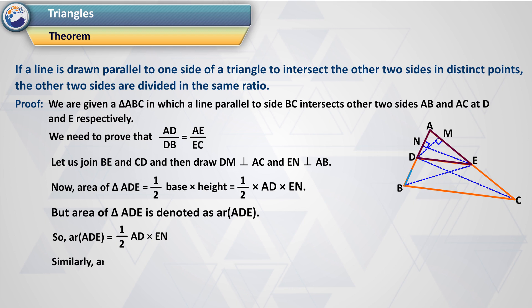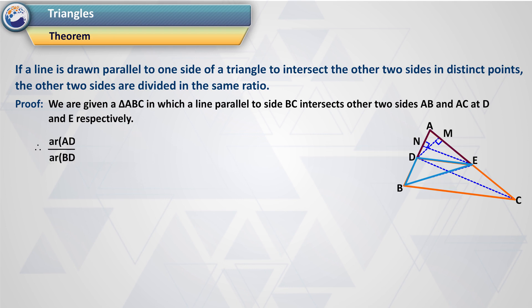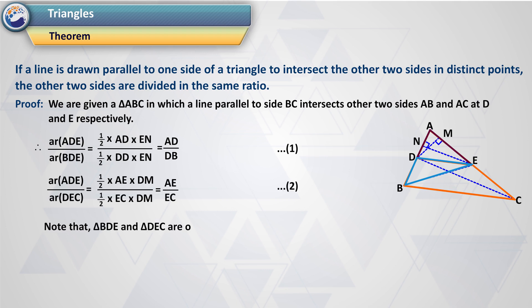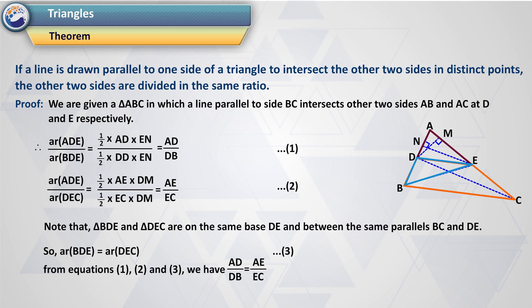Similarly, area of triangle BDE equals half × DB × EN, and area of triangle DEC equals half × CE × DM. Therefore, area(ADE)/area(BDE) = (½ × AD × EN)/(½ × DB × EN) = AD/DB — equation 1. And area(ADE)/area(DEC) = (½ × AE × DM)/(½ × EC × DM) = AE/EC — equation 2. Note that triangles BDE and DEC are on the same base DE and between the same parallels BC and DE. Therefore, AD/DB = AE/EC.